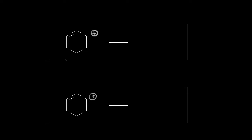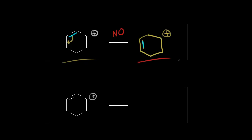Let's say we wanted to draw a resonance structure for this carbocation. Some students would take these electrons and move them down to here and say that on the right they now have this resonance structure. Let me highlight those electrons in blue — these electrons move down to here. But this is incorrect.